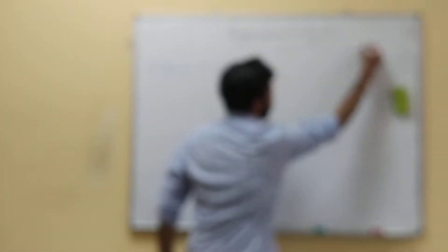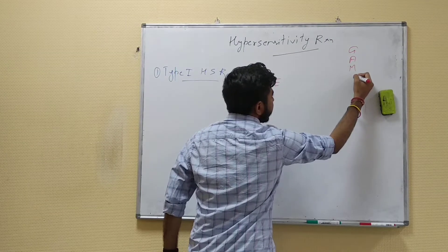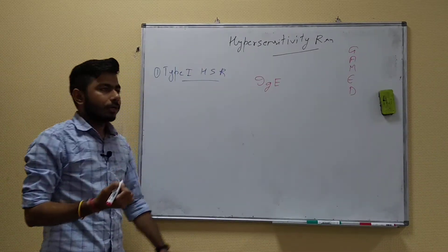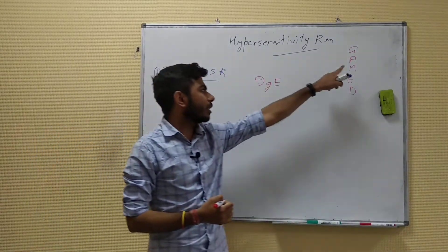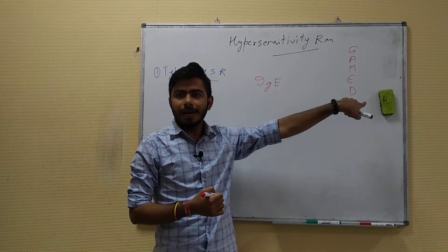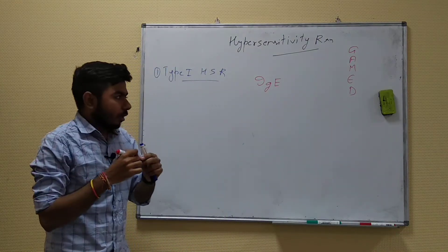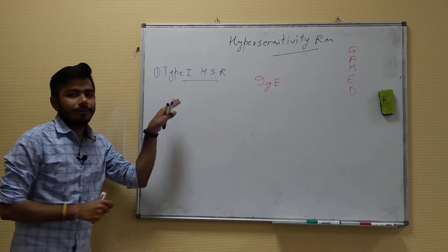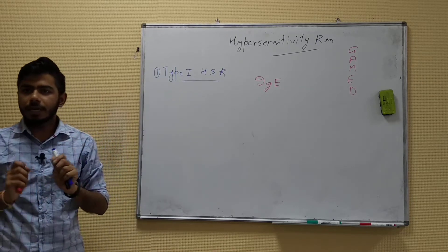Immunoglobulins are also called antibodies. There are five kinds — you can remember them with the mnemonic GAMED: IgG, IgA, IgM, IgE, and IgD. Immunoglobulin E is the one involved in type 1 hypersensitivity reactions.